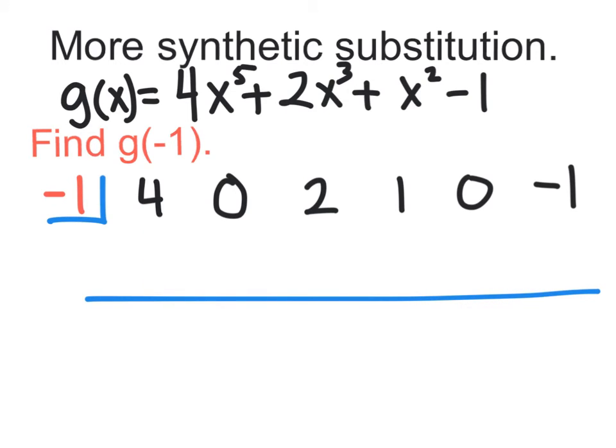As the 4 comes down, we get a 4 down here. And what do we get up here? Negative 4. And what do we get down here? Negative 4. And what do we get up here? 4. And what do we get down here? 2. You see? It's easy. And then what do we get up here? Negative 6. And what do we get down here? Negative 5. And what do we get over here? 5.